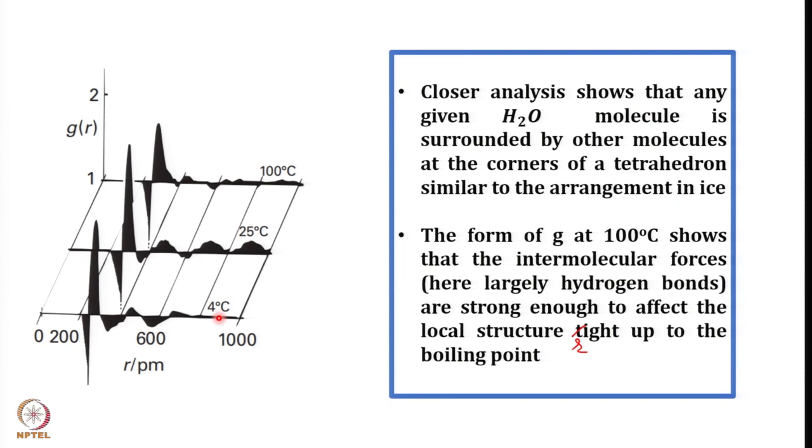Obviously when you increase the temperature this is also going to change, because even the hydrogen bonding is dependent upon temperature — if you keep on increasing the temperature, this hydrogen bonding is also weakened. The form of the radial distribution function at 100 degrees Celsius shows that the intermolecular forces are strong enough to affect the local structure right up to the boiling point. This is based upon the comparison at three different temperatures. Water becomes peculiar in the sense that liquid water presents anomalous properties. Whereas if you take solvents like DMSO, carbon tetrachloride, etc., the issue of hydrogen bonding does not arise to that much.